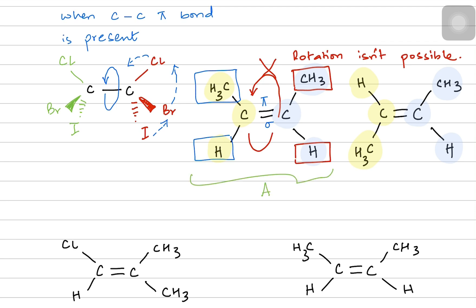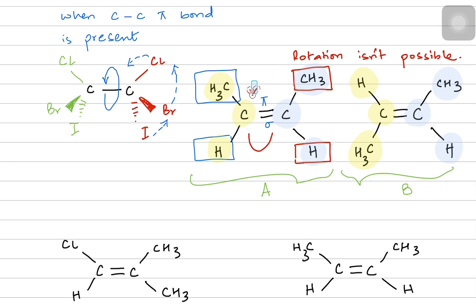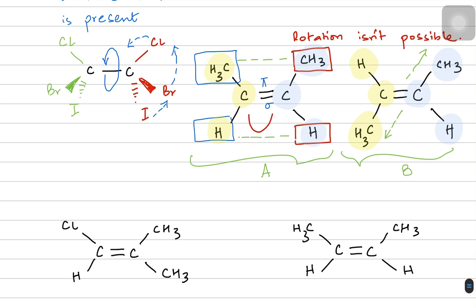Let's call the structure on the left as A and the structure on the right as B. In structure A, you can notice that both methyl groups are in front of each other and both hydrogens are in front of each other. But in structure B, the methyls are facing in opposite direction. The first structure is called cis geometrical isomer. The one on the right where both groups are facing in the opposite direction is known as a trans structure.